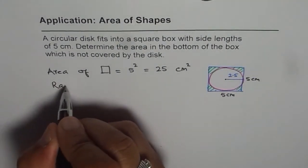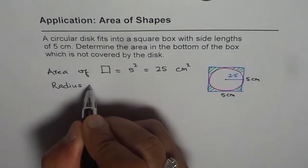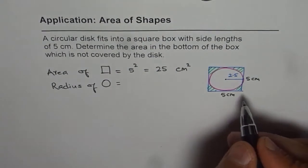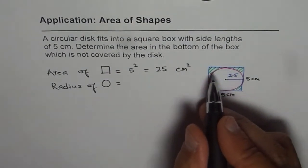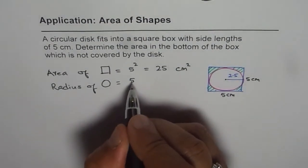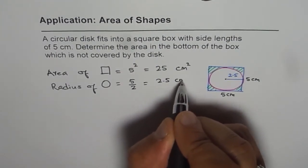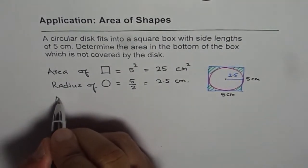The radius of the circle equals half of the diameter. The diameter is 5 since it just fits into the square. So 5 divided by 2 gives us 2.5 centimeters.